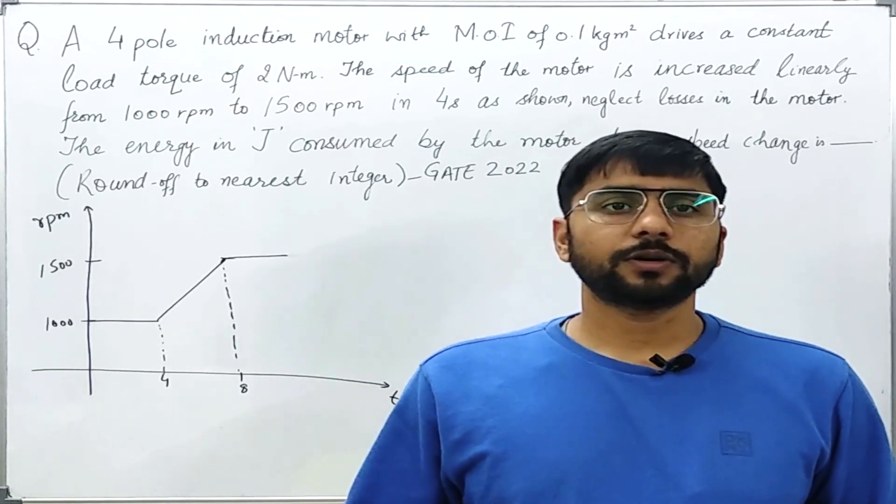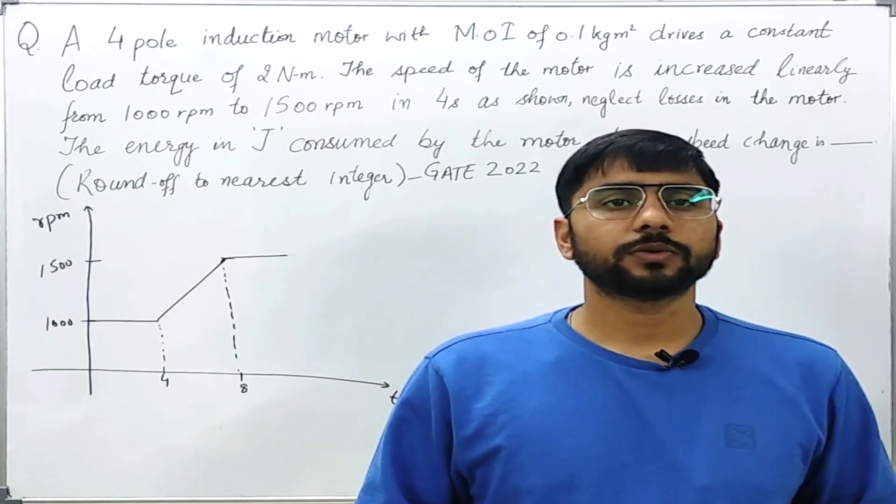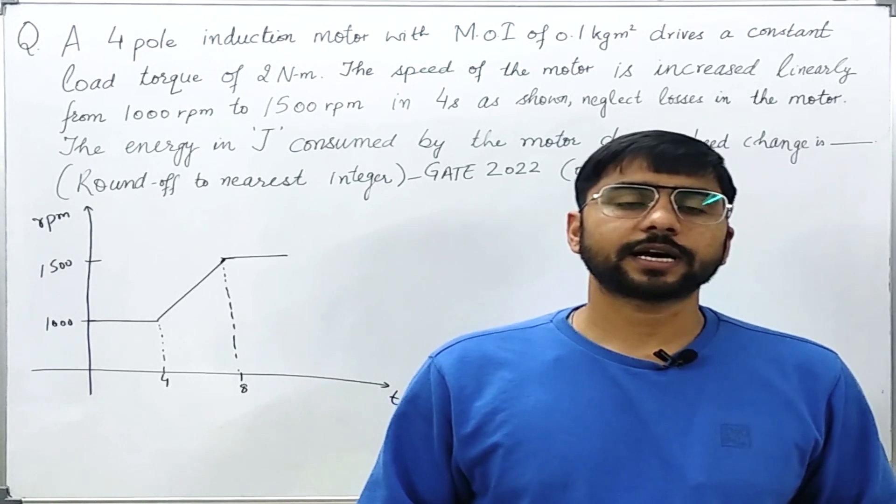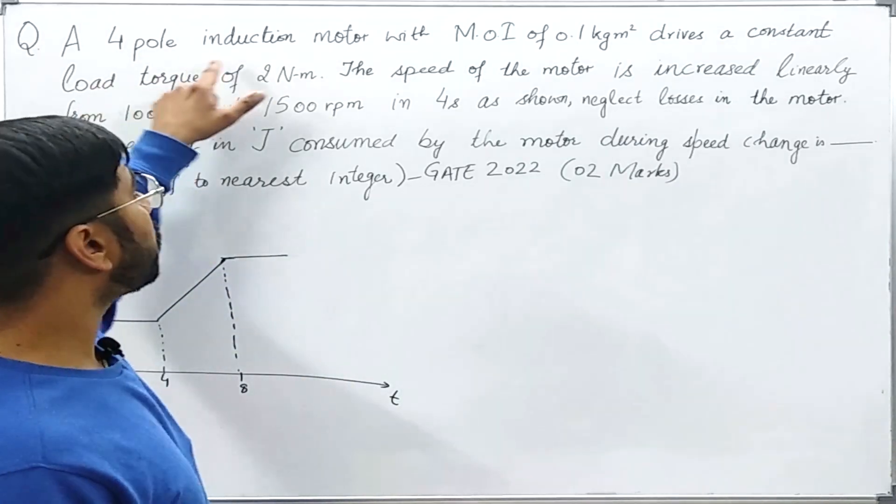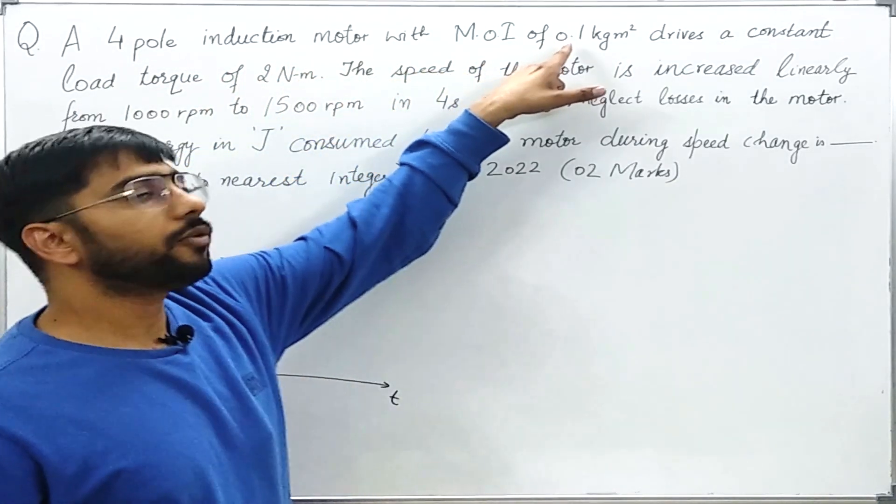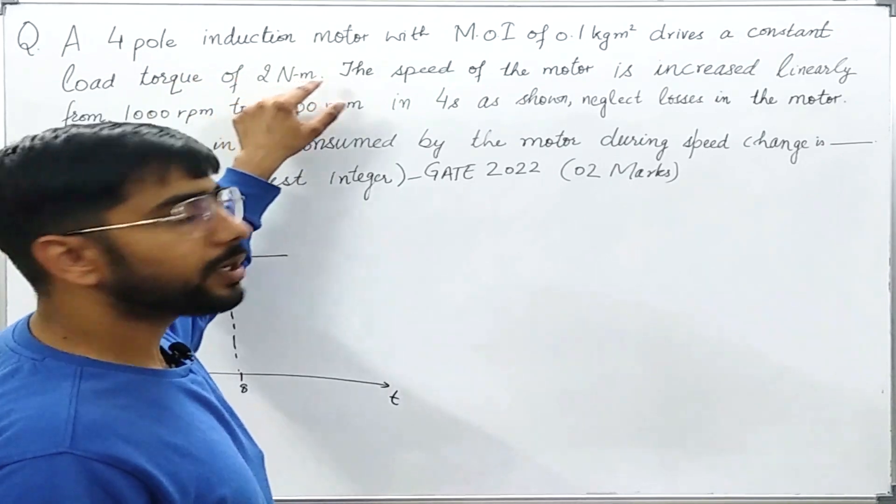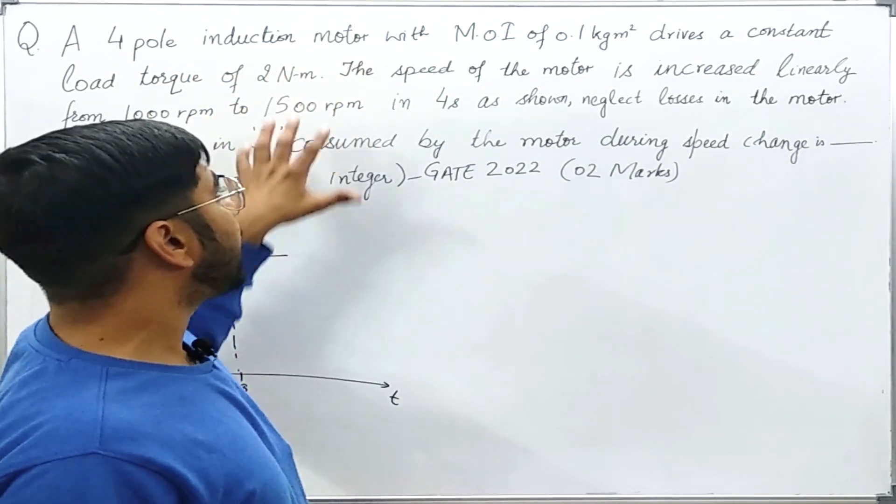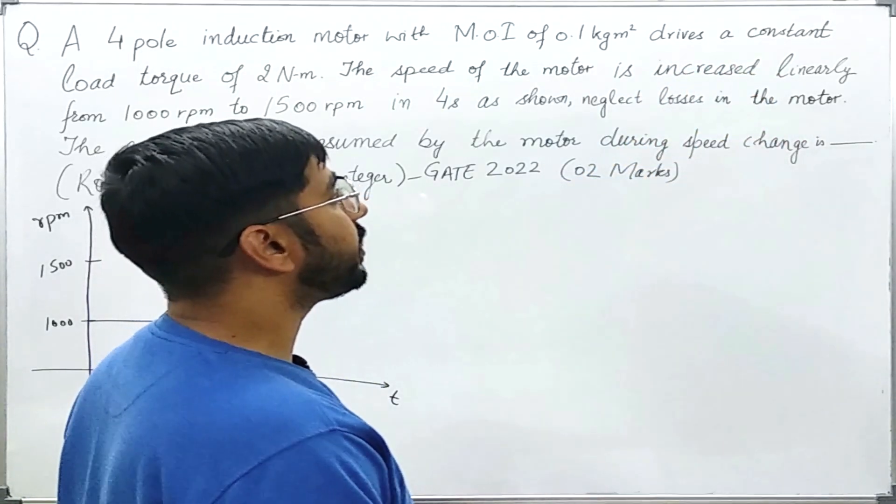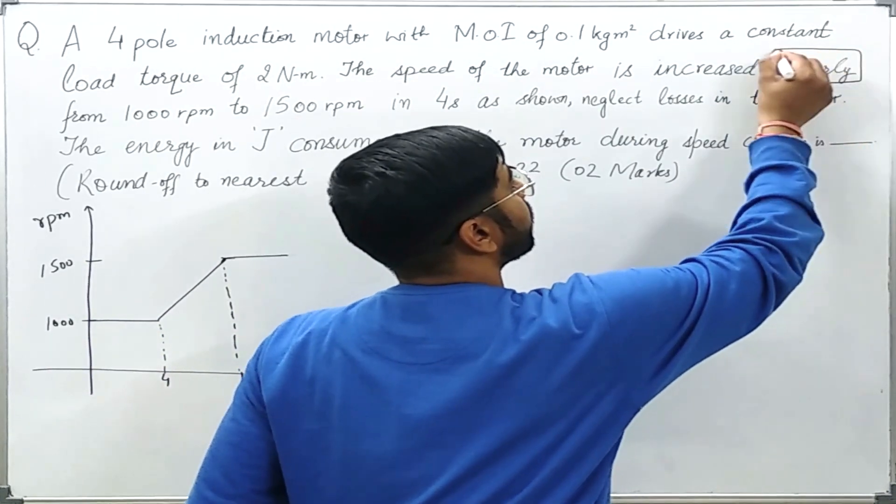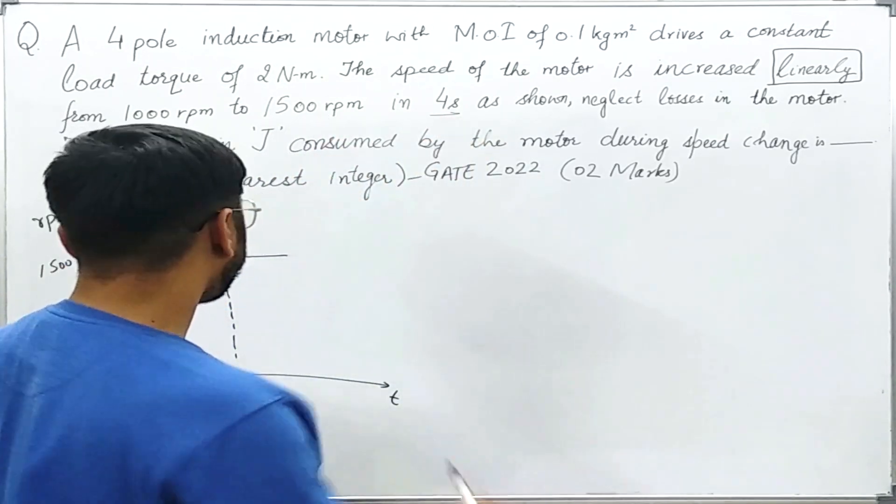Now usually I don't make videos on such kind of topics which are controversial, but I am trying to convey the physics behind the question which I think is correct. Now let us see what is the question. We are told that there is a four pole induction motor with moment of inertia of 0.1 kg meter square which drives a constant load torque of 2 Nm. Now it is also told that the speed of the motor is increased linearly. This word linearly is important here.